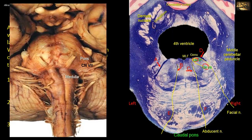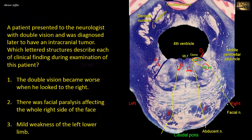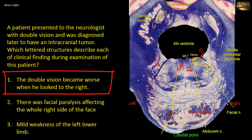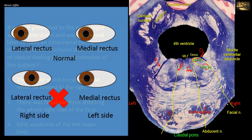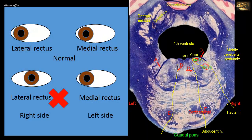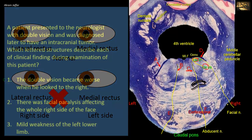E and F represent the longitudinally running corticospinal and corticobulbar fibers. The first clinical finding was double vision that became worse when the patient looked to the right. Looking to the right requires the right lateral rectus and left medial rectus. The right lateral rectus is supplied by the right abducent nerve. So C is affected in this case.